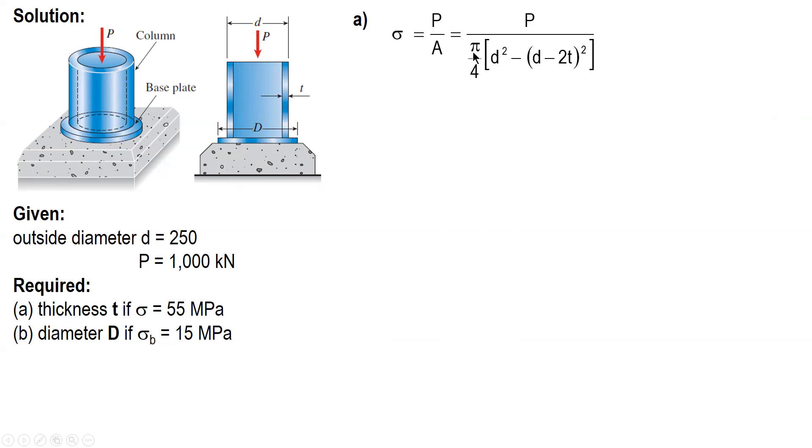P over area, pi over 4, outer diameter squared minus inner diameter squared. And let's substitute values. Make sure that all units are in newtons and millimeters, consistent with stress in megapascals, which is newton per millimeter squared. So P will be converted to newtons.